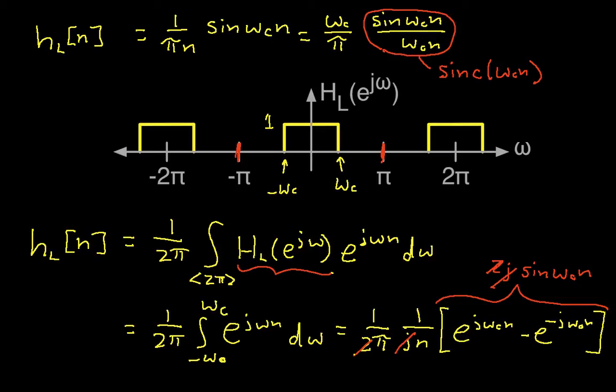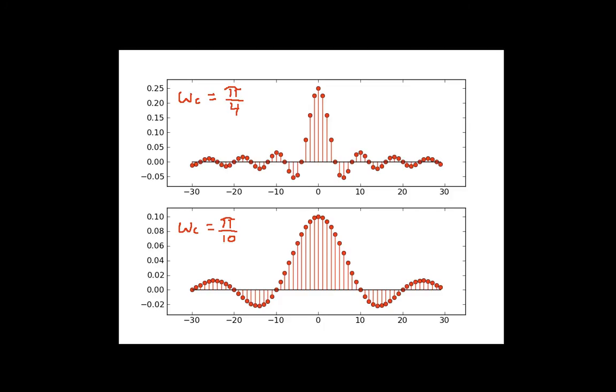So I've computed this and plotted it, and I got the following. For omega c is pi over 4, the HL of n looks like this, where this number here is n.